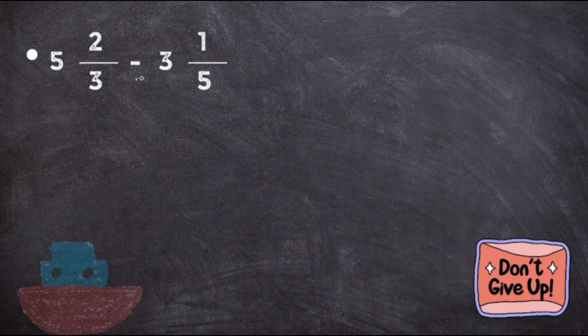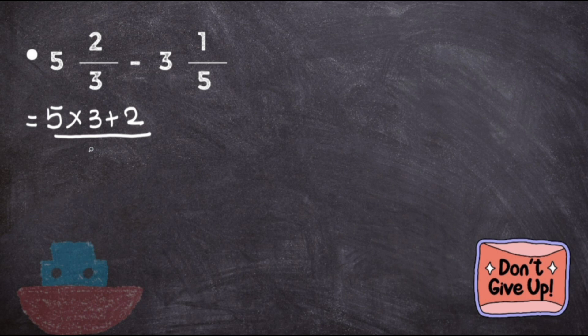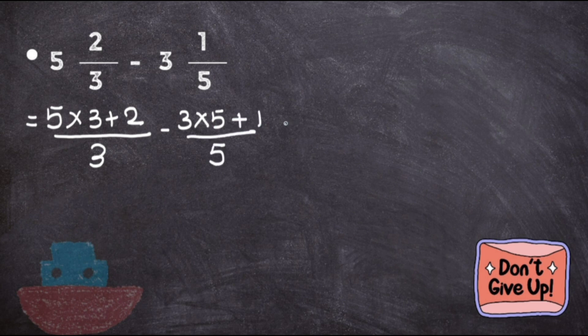First, directly convert: 5 times 3 plus 2 upon 3, minus 3 times 5 plus 1 upon 5. The first fraction is 5 times 3 equals 15 plus 2 equals 17, minus the second is 3 times 5 equals 15 plus 1 equals 16.